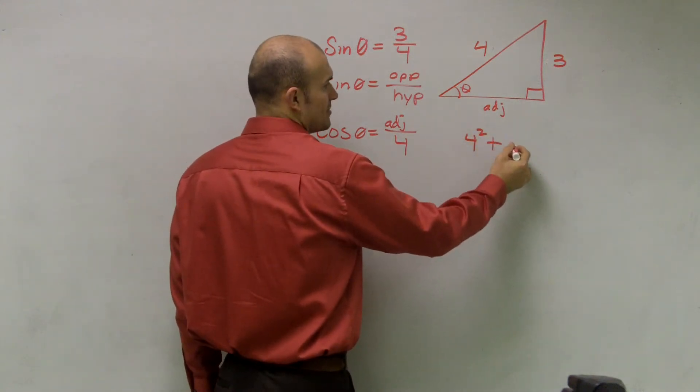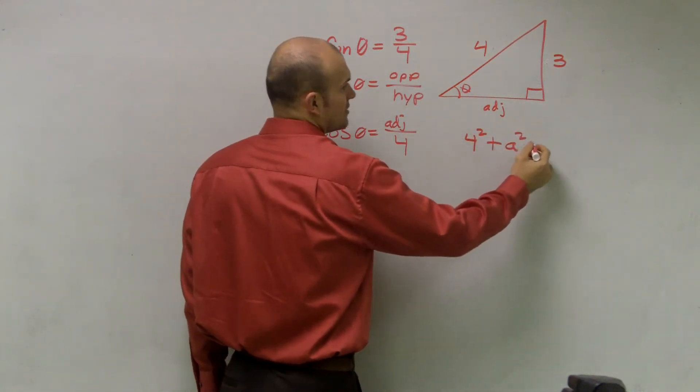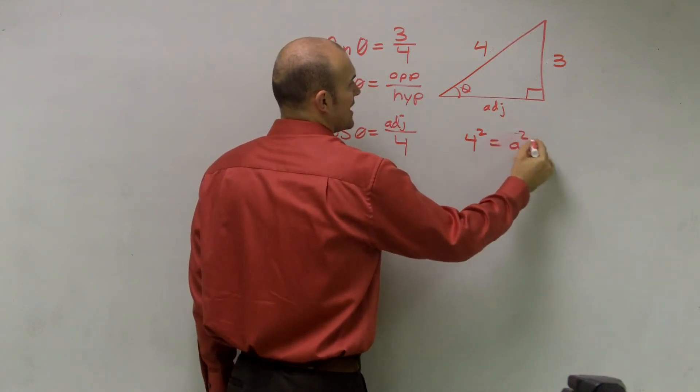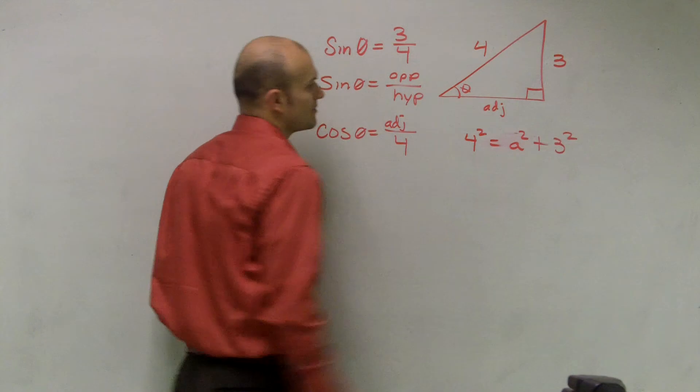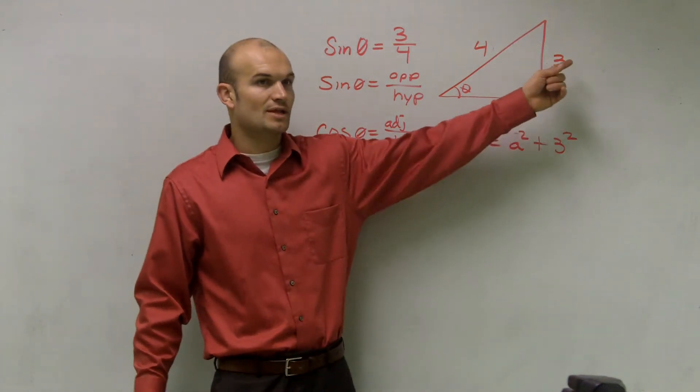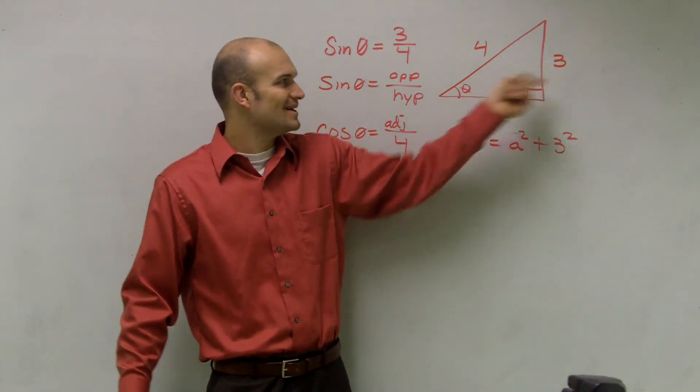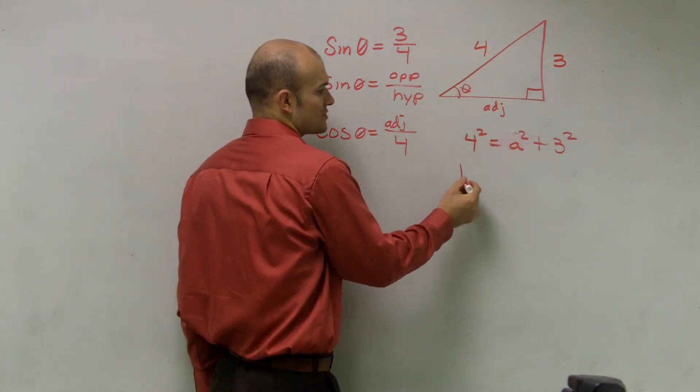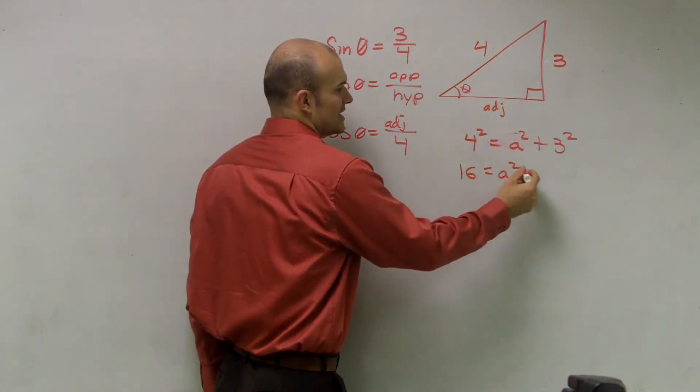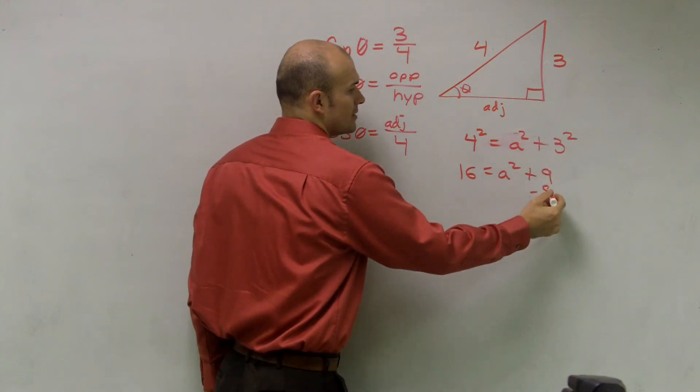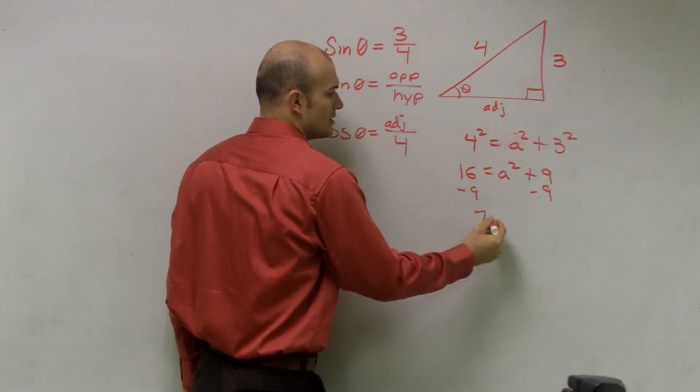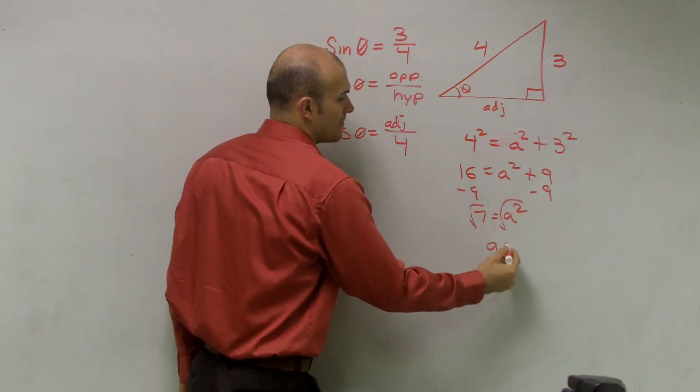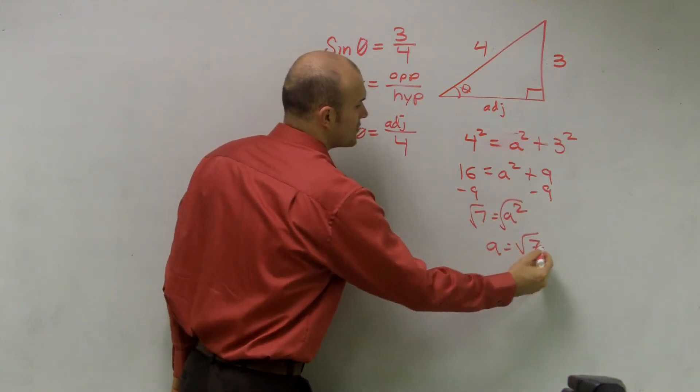Say four squared plus, I'm just going to call it adjacent, a squared, I'm sorry, four squared equals a squared plus three squared, right? So two legs, two legs squared equals your hypotenuse squared. So four squared is 16 equals a squared plus nine, subtract nine, seven equals a squared, square root, a equals the positive square root of seven.